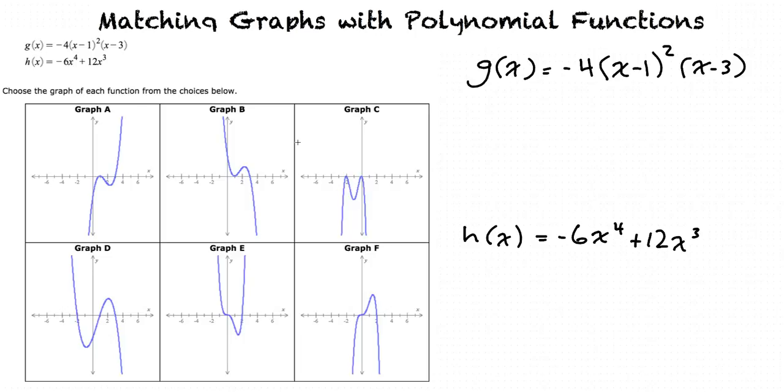We have graph a, b, c, d, e, and f. Some important features to look at when interpreting a polynomial function are its leading coefficient, the degree, and the multiplicity of its zeros. The leading coefficient and degree affect the graph's end behavior.